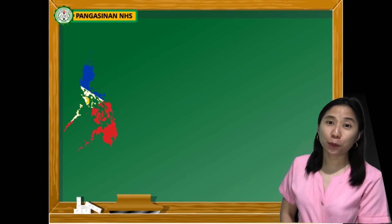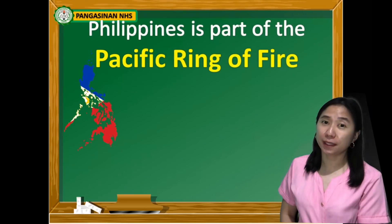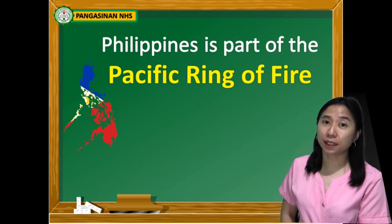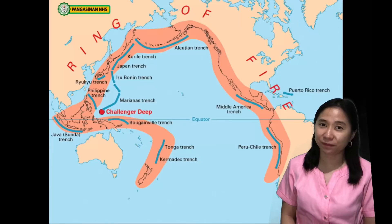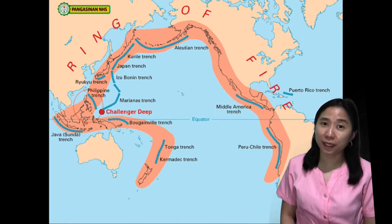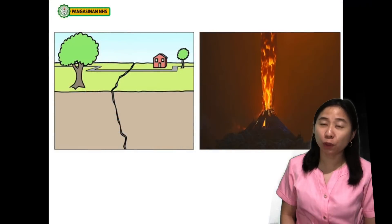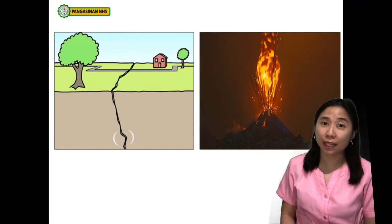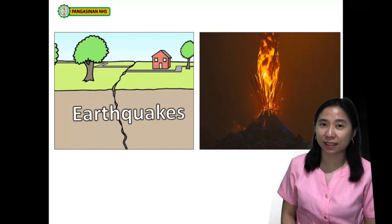You have learned from your past science lessons that the Philippines is part of the Pacific Ring of Fire. This means that our country and other places located at the Ring of Fire experience earthquakes, volcanic eruptions, and other tectonic activities.